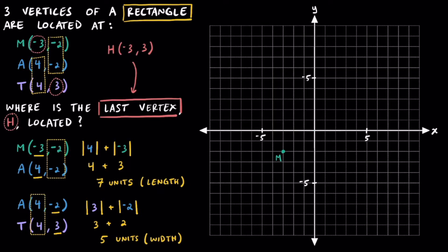To plot point A, we'll start at the origin and move 4 units to the right and 2 units down to plot point A in quadrant 4. For point T, we'll start at the origin and move 4 units to the right and then 3 units up to plot it in quadrant 1.